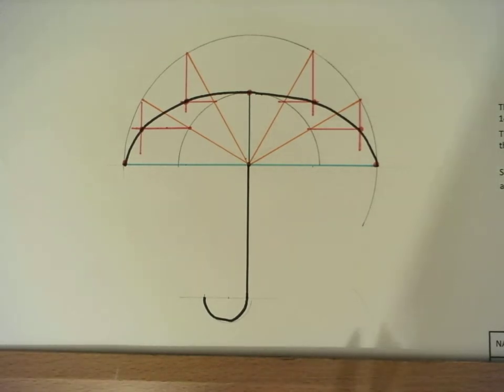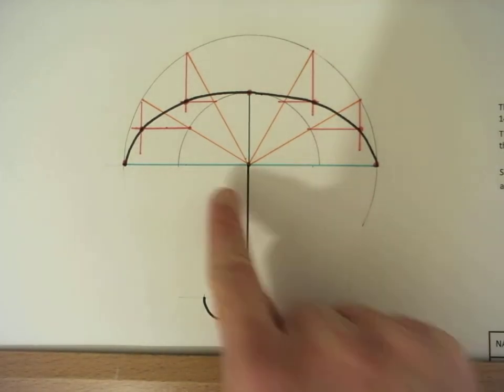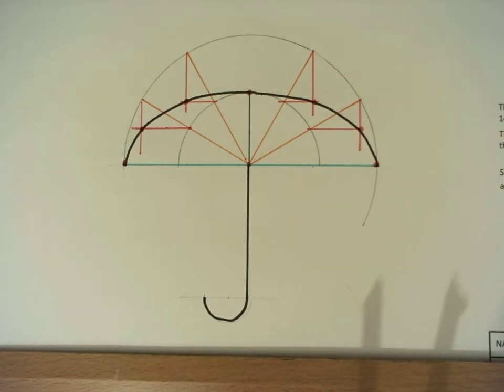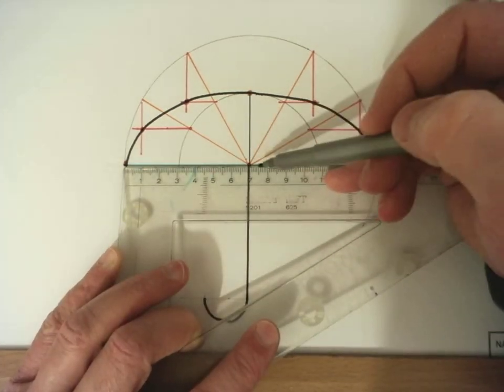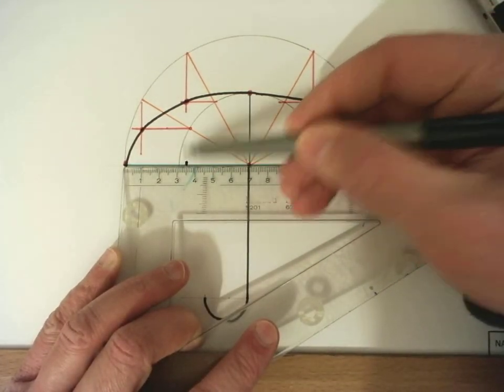Finally to finish off we have to draw the arcs at the bottom of our umbrella just to give it that umbrella shape. The first thing we need to do is mark off halfway points. So this is 70, halfway is going to be 35.